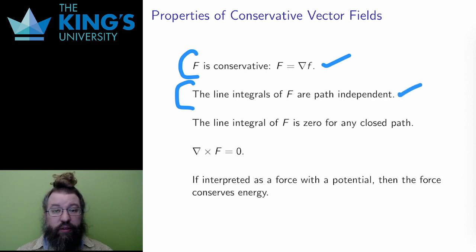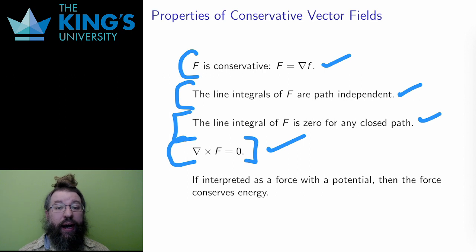This is equivalent to the line integral of F being zero over any closed path. If the start and the end is the same, then the potential energy is the same, and no net effect has been accomplished. And finally, this is equivalent to the field being irrotational. On this path-connected, simply-connected set, I can use the curl to check if the field is conservative.